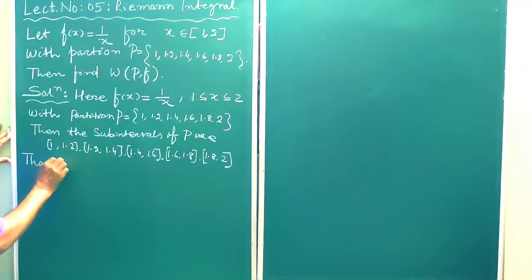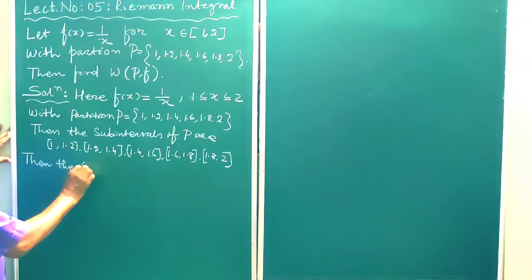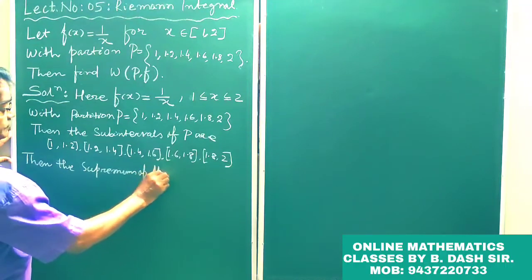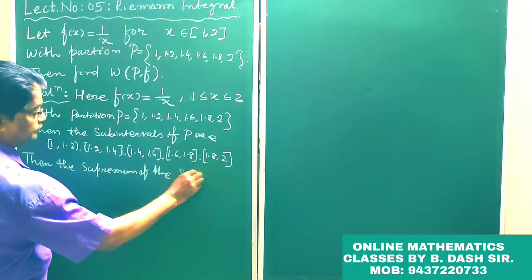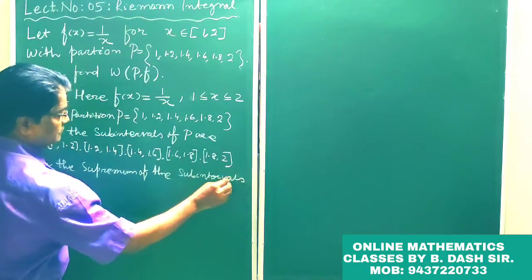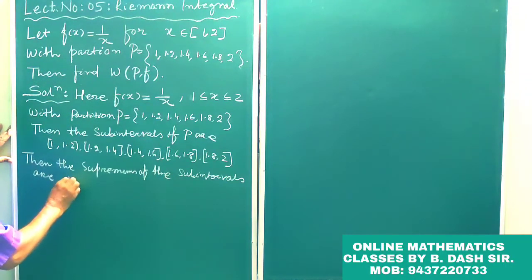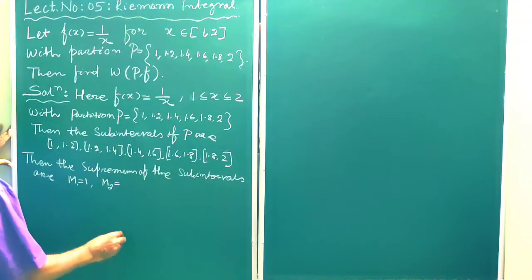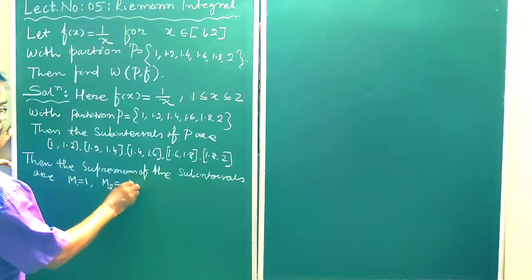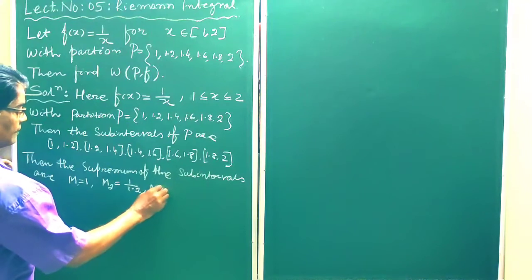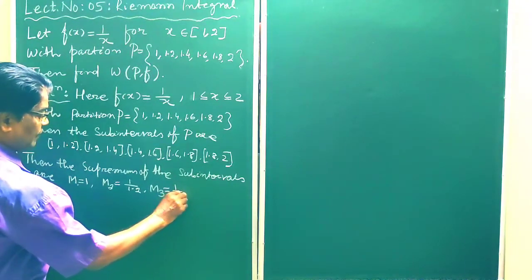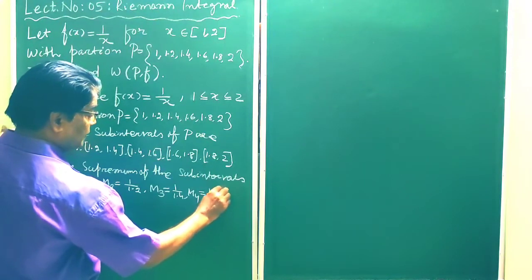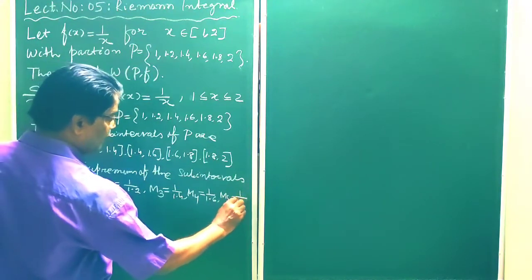The suprema of f over the sub-intervals are: M1 = 1, M2 = 1/1.2, M3 = 1/1.4, M4 = 1/1.6, M5 = 1/1.8. Since f(x) = 1/x is decreasing, the supremum on each sub-interval occurs at the left endpoint.